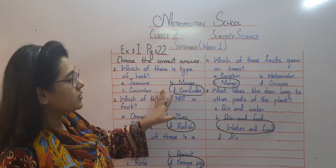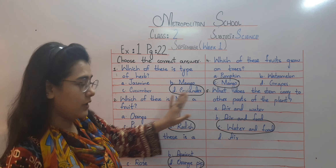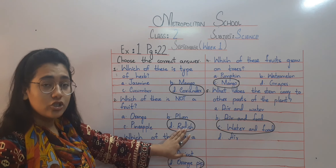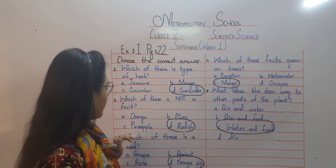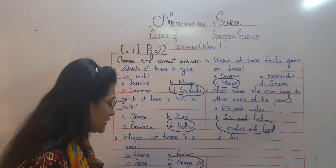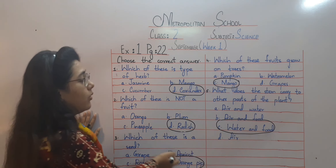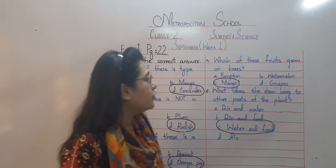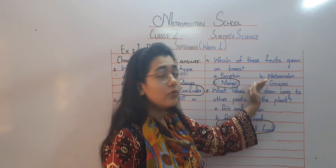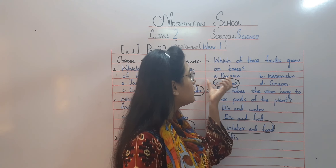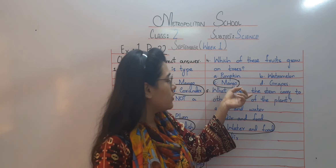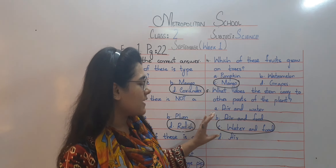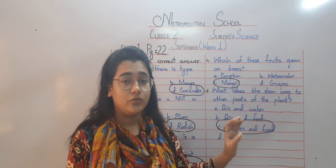Let's repeat the answers one more time. Number one: circle the herb — coriander. Number two: which is not a fruit — radish, it's a vegetable. Number three: which is a seed — orange pip. Number four: which fruit grows on trees — mango. Number five: what does the stem carry to the other parts — water and food.